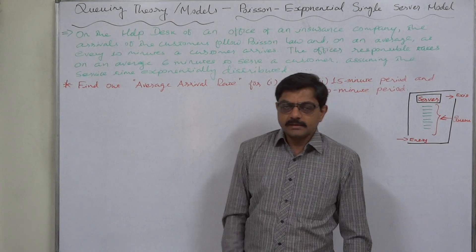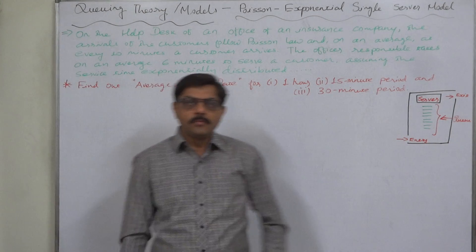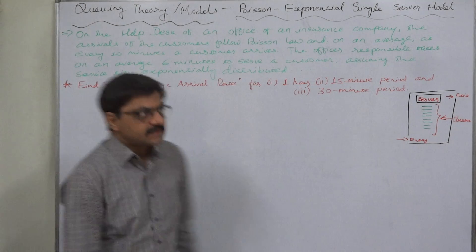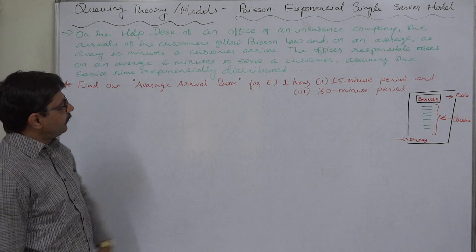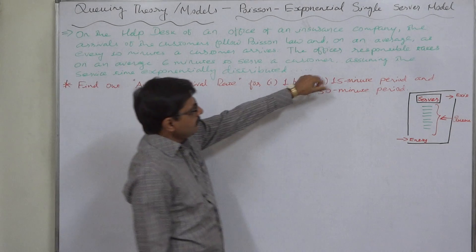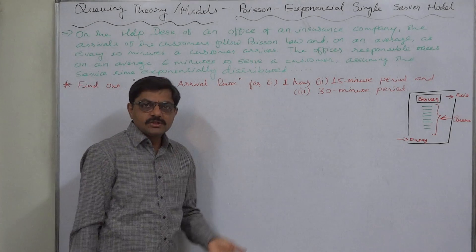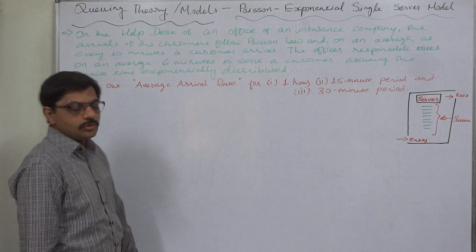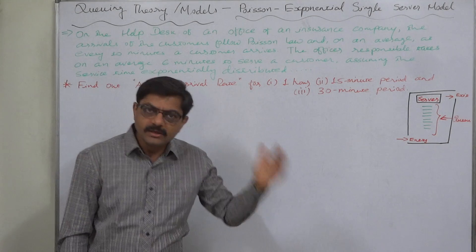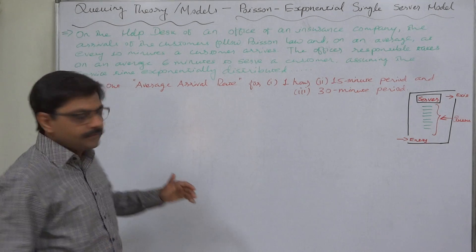We have taken a simple problem and with the help of this problem we are going to discuss all possible calculations of Poisson exponential single server model. The case is on the help desk of an office of an insurance company. The arrivals of customers follow Poisson law and on an average at every 10 minutes a customer arrives. This is an average gap between the arrivals of two customers.